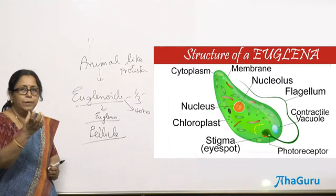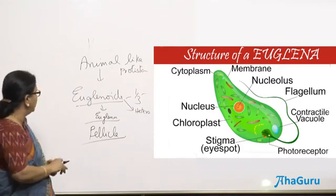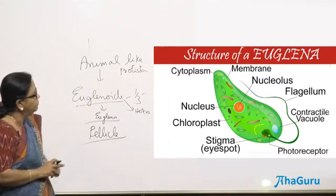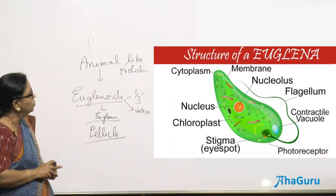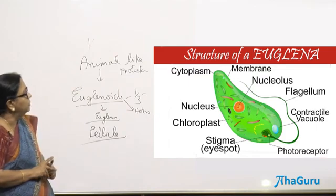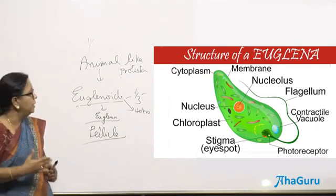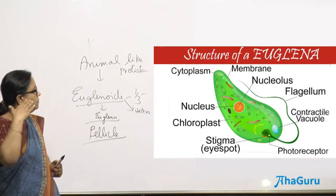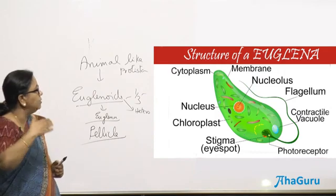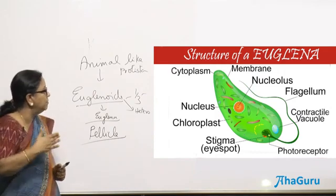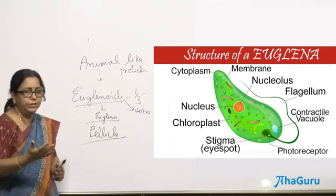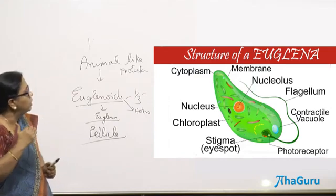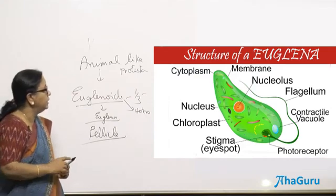The pellicle is a proteinaceous sheath found above the cell membrane. It gives them flexibility to change their shape. Euglena also divides by binary fission, which is longitudinal.